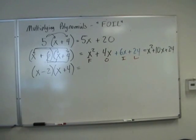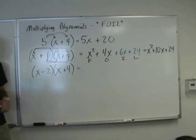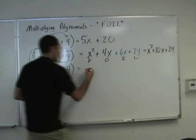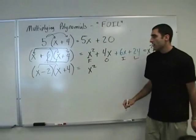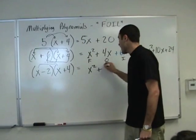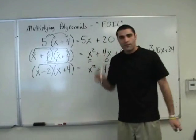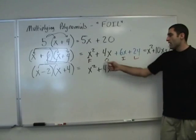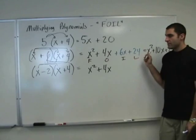Volunteer to distribute this first x — meaning F and O. It will be x squared, since x times x is x squared. Plus 4x, achieved by multiplying x by 4. Good. Now I and L, please.